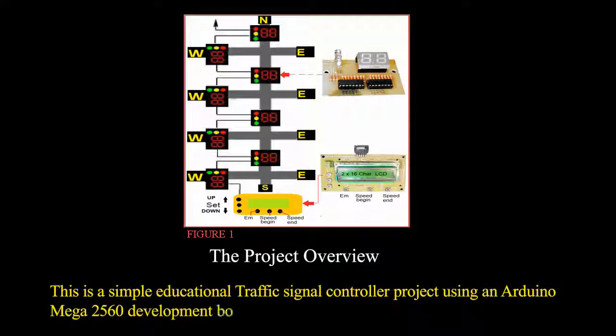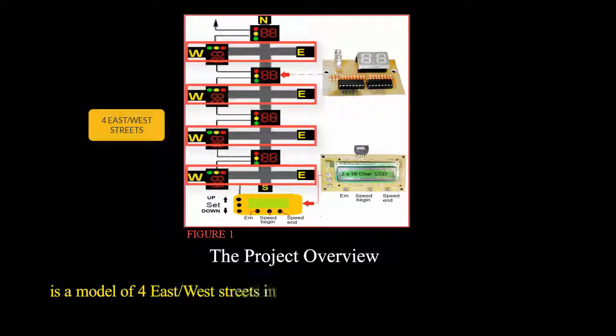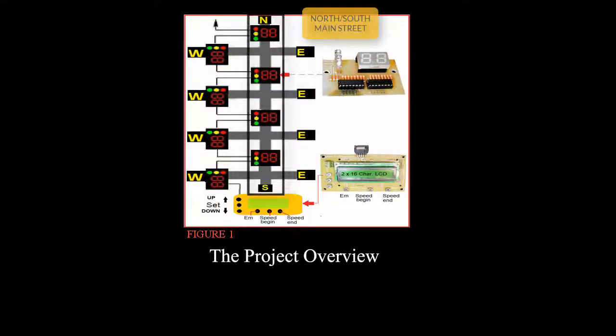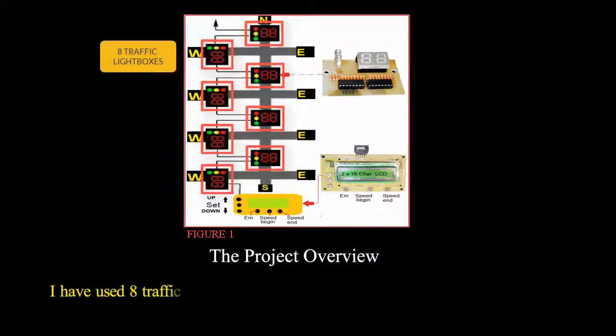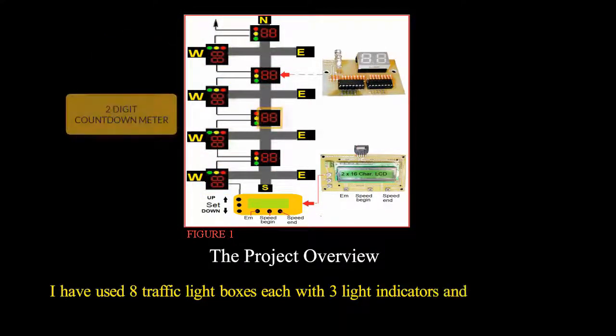The hardware structure of the project is a model of four east-west streets intersecting with a north-south main street. I have used eight traffic light boxes, each with three light indicators and a one-two digit countdown meter, plus a two by 16 character LCD.